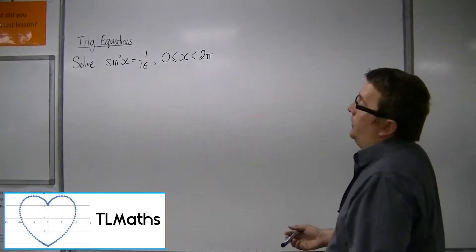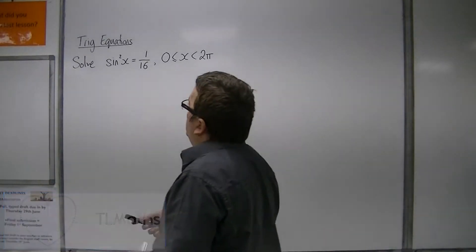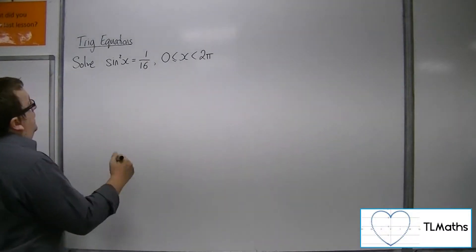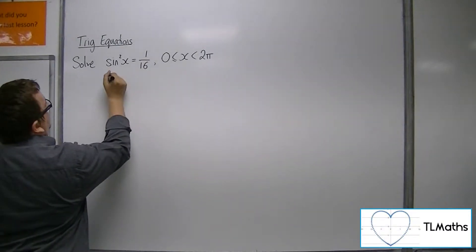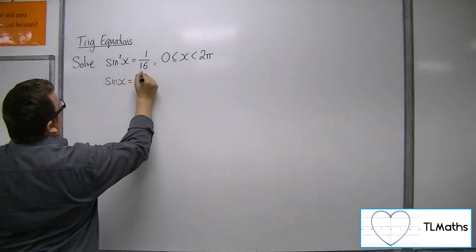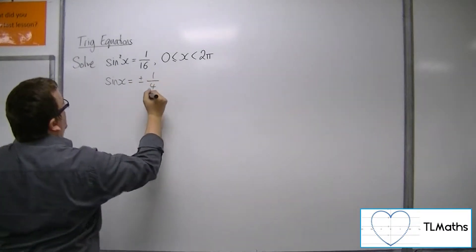So let's say I want to solve sin²x = 1/16 between 0 and 2π radians. So I'm going to square root both sides, and that would be sin x is plus or minus 1/4.